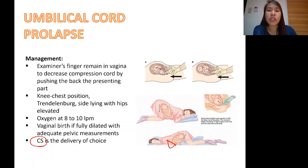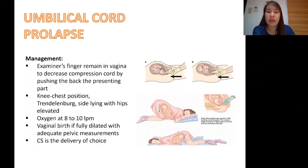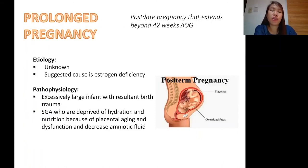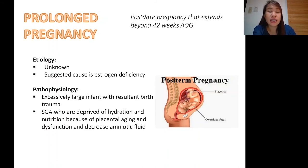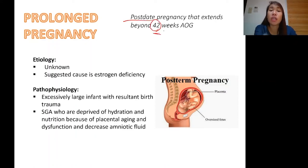Remember: umbilical cord prolapse is an emergency situation. We need to know what to do when it occurs. Now, another condition we will discuss is prolonged pregnancy — also called post-dated pregnancy — which extends beyond 42 weeks age of gestation. Note that it is 42 weeks, not 40 weeks.